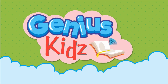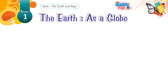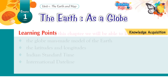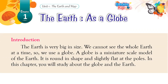Genius Kids: Cultivating Love for Learning. Chapter 1: The Earth as a Globe. Learning Points — after completing this chapter, we will be able to know about the globe as a man-made model of the Earth, the latitudes and longitudes, Indian Standard Time, and the International Dateline. Introduction: The Earth is very big in size. We cannot see the whole Earth at a time, so we use a globe. A globe is a miniature scale model of the Earth. It is round in shape and slightly flat at the poles. In this chapter, you will study about the globe and the Earth.